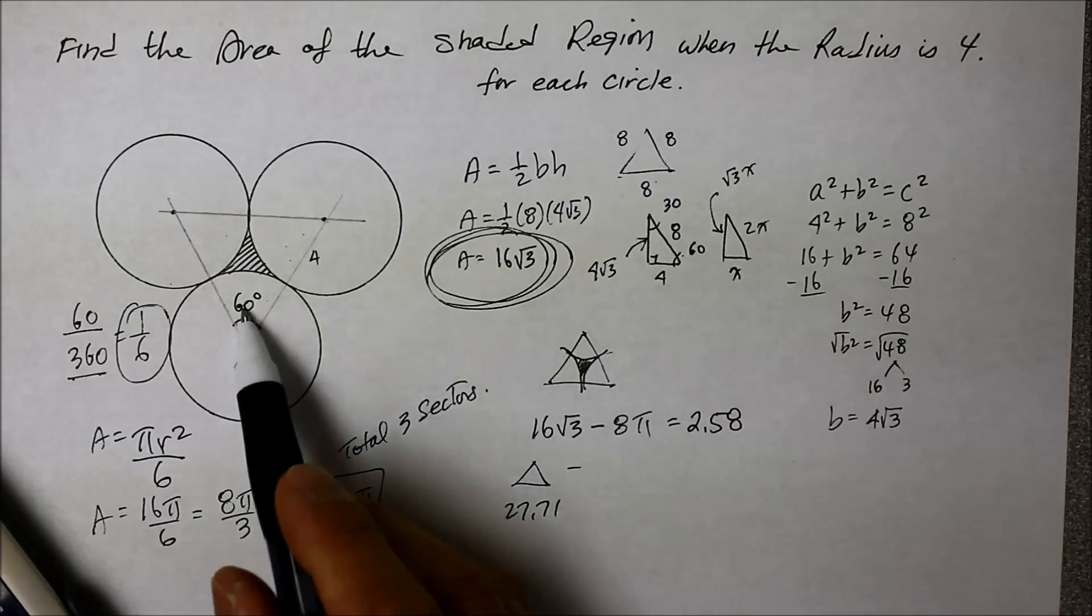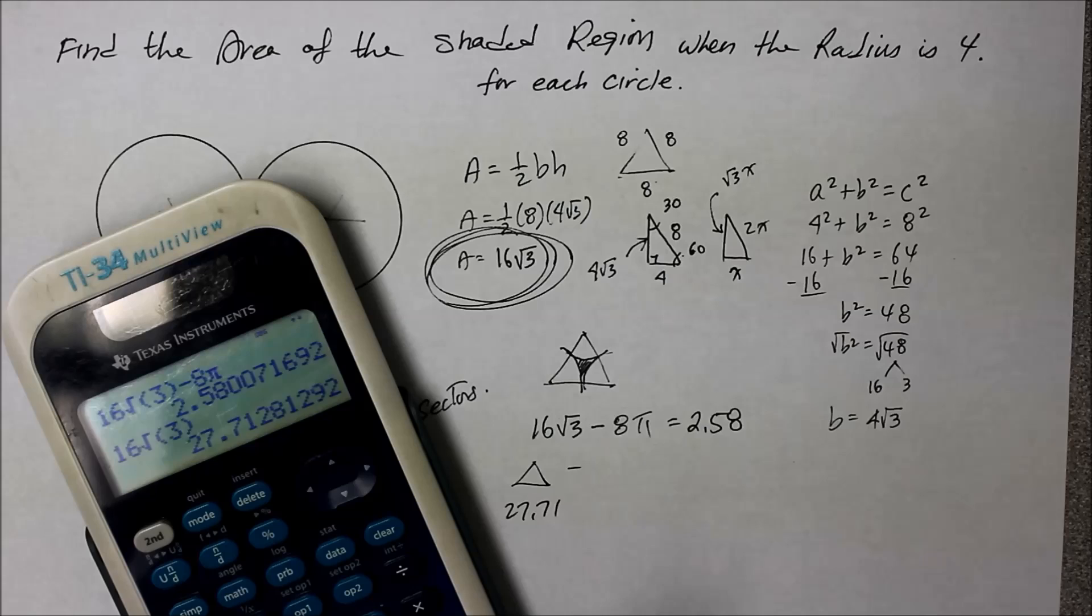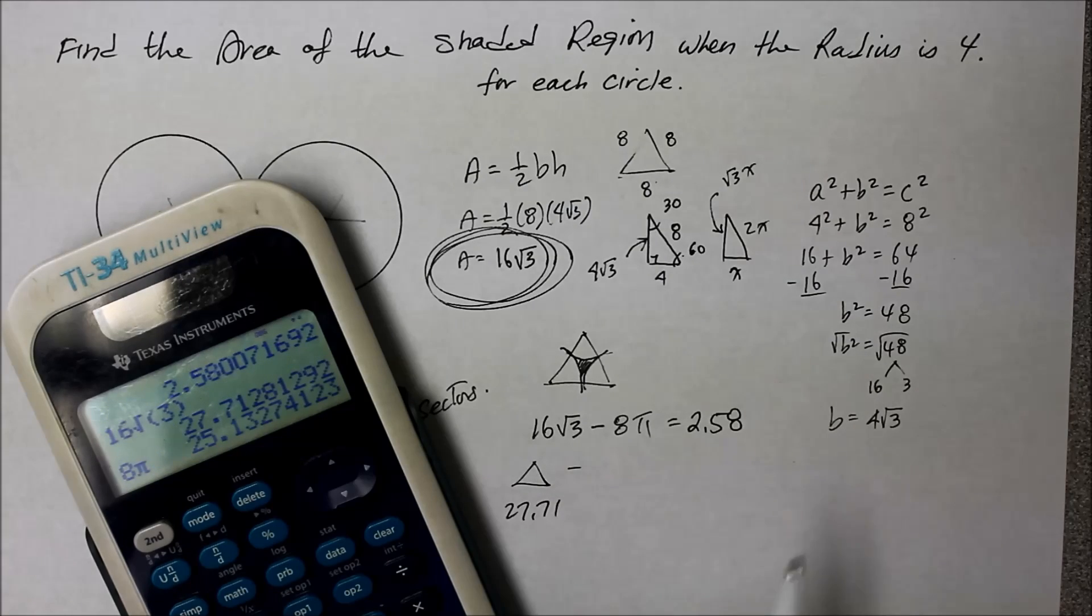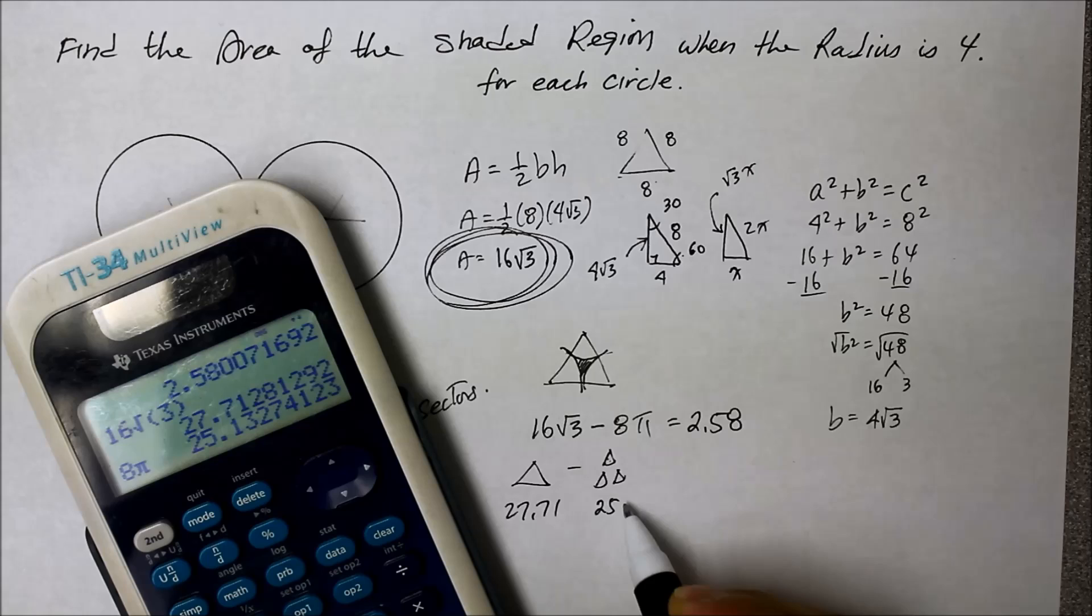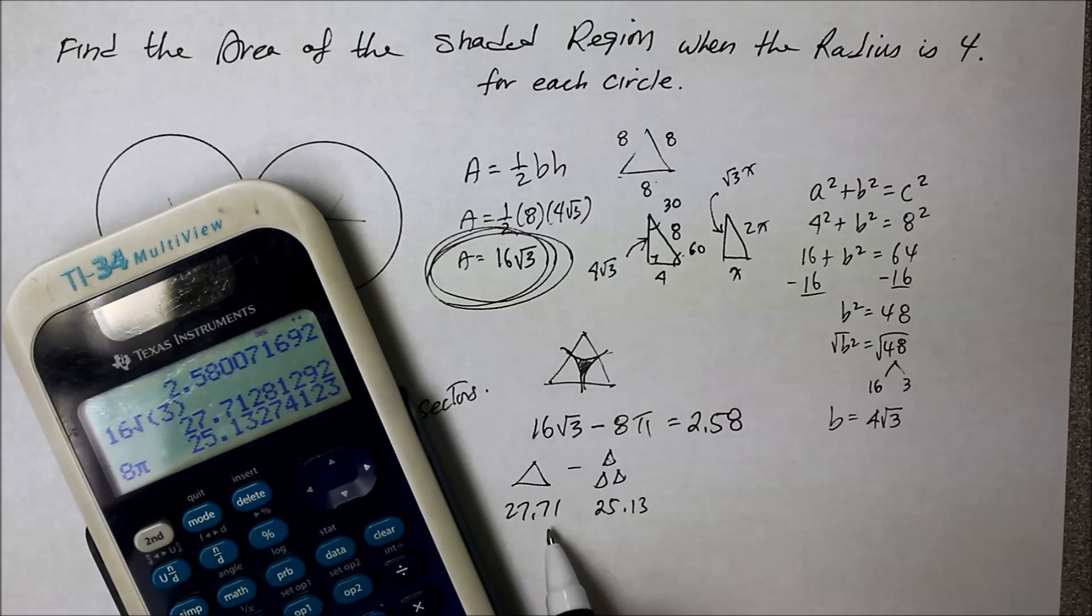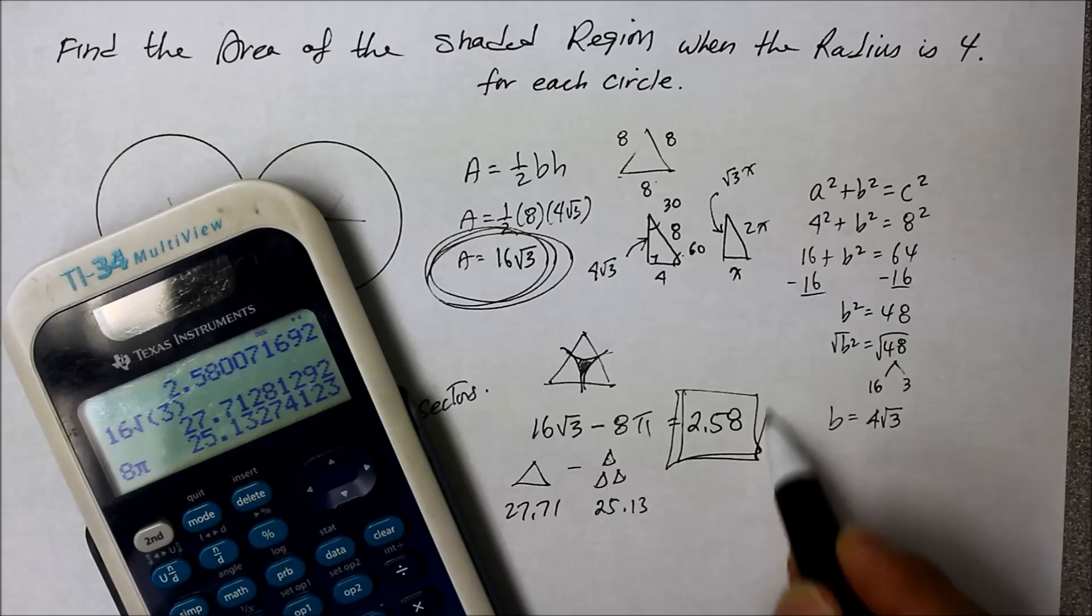Take away the 3 sectors, 8 pi. And 8 pi is, oh, okay. So the 3 sectors, 1, 2, 3 is 25.13. I see. So you should try to get 2.58. Sounds good to me.